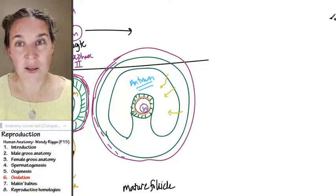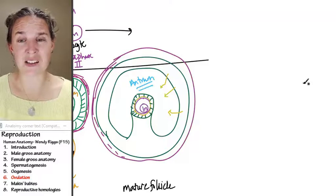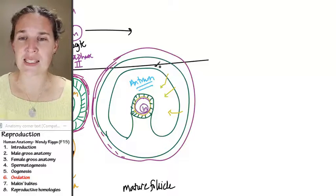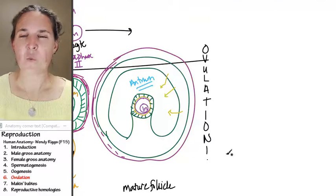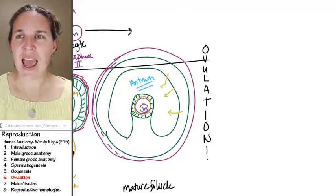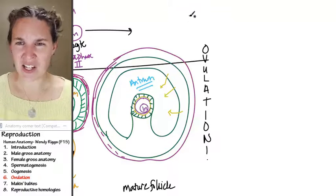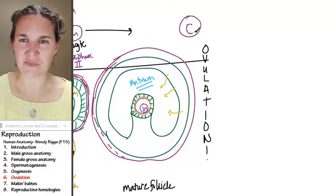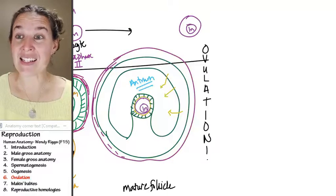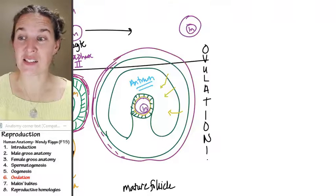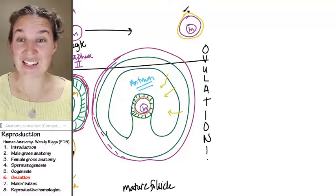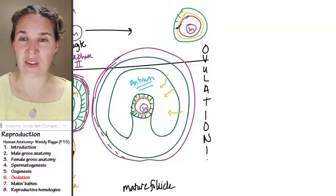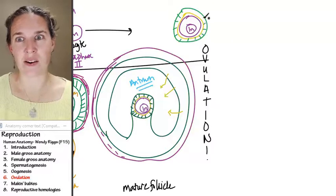The mature follicle is going to become something else. So let's follow it through. When ovulation occurs, the explosion happens and what comes out is actually the secondary oocyte and the zona pellucida, which is around the outer edge, and corona radiata. All that stuff comes out with the secondary oocyte.